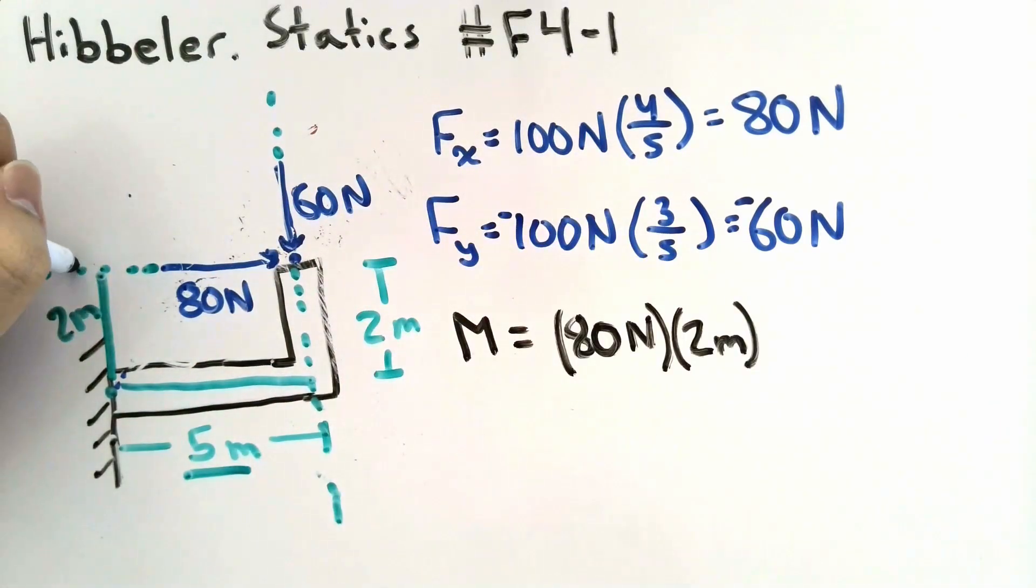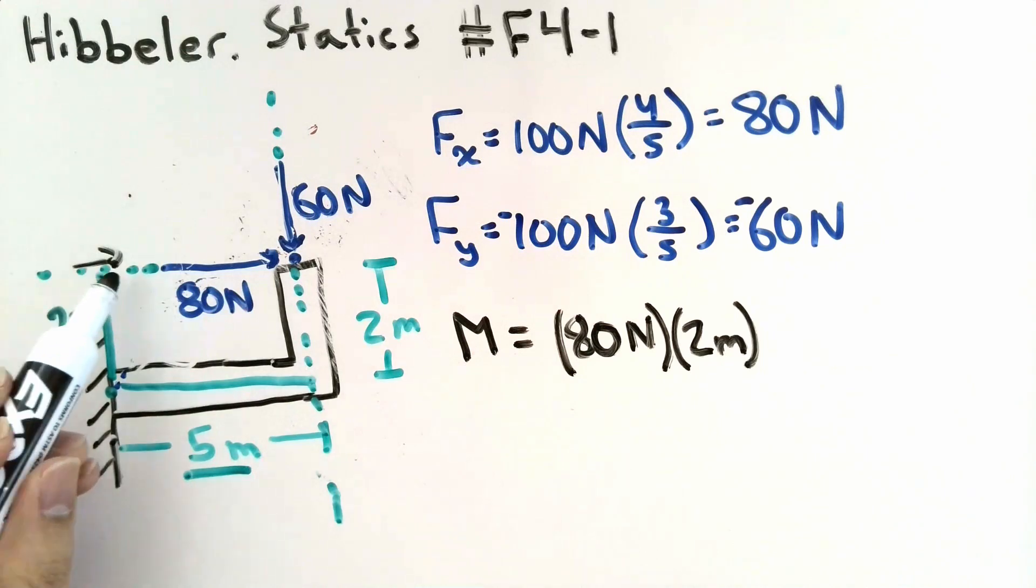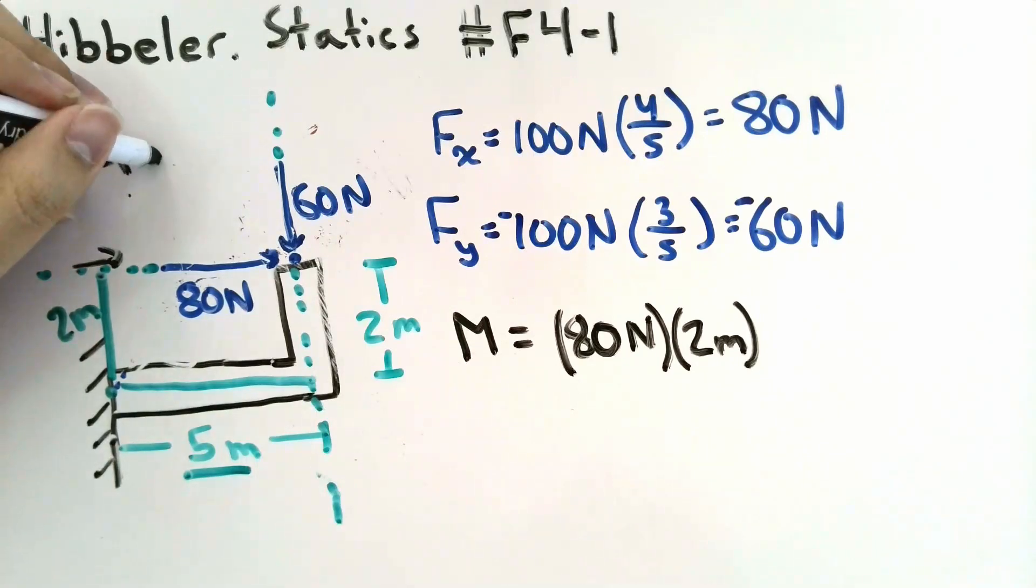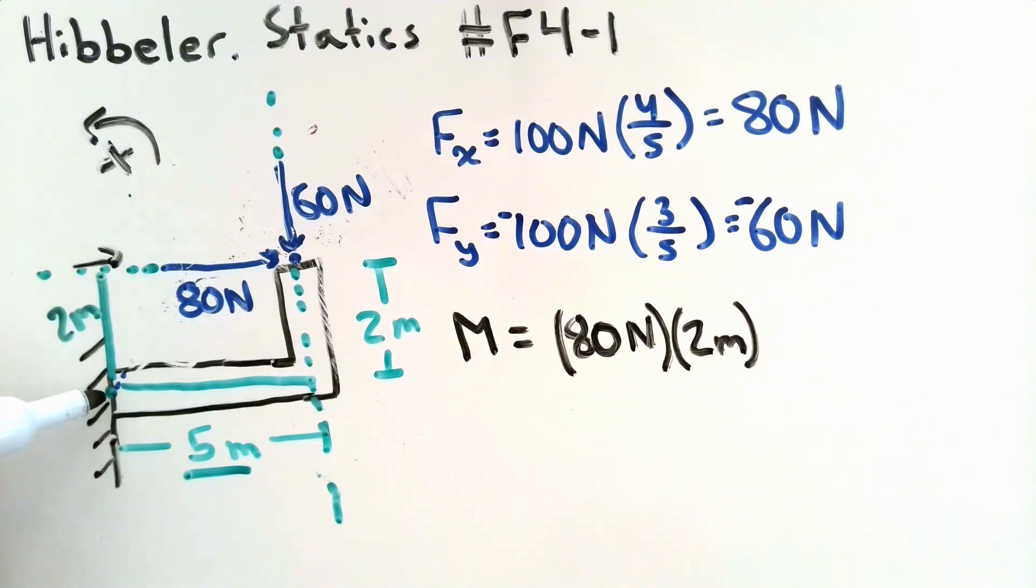Notice that this force will result in a clockwise rotation for the point. Typically for moments, our sign convention is to set the counterclockwise direction as positive. That means that the moment that the 80 N force causes about the point will be a negative moment.